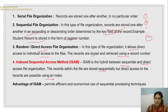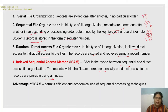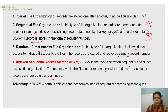In sequential organization, if you are at the fifth record and want to go to the second record, you have to go back through the first, second, and third records — they are strictly accessed one after another.